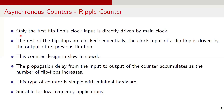Asynchronous counters are also known as ripple counters. In these counters, only the first flip-flop is directly clocked by the main clock signal. The subsequent flip-flops are clocked sequentially, with each flip-flop's clock input driven by the output of the previous flip-flop. This design makes the state changes ripple through the chain of flip-flops, so propagation delay accumulates as the number of flip-flops increases, making these counters slower. Despite this limitation, asynchronous counters have a simple design with minimal hardware, making them suitable for low-frequency applications.